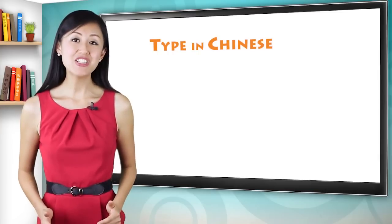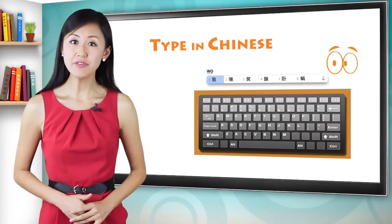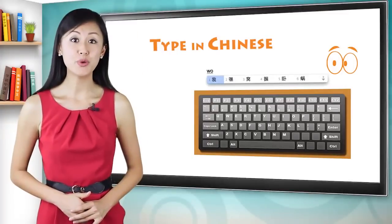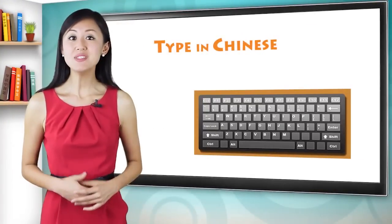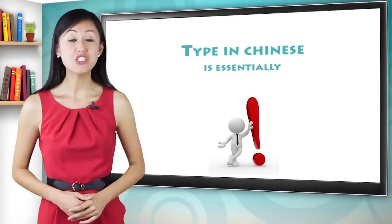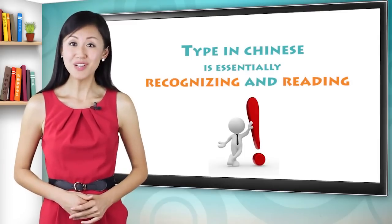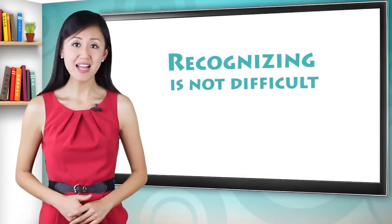So when you type in Chinese, you first need to spell out the words in pinyin, and then look at a list of characters generated by the computer, and pick out the one that you want. So can you see how the process of typing in Chinese is essentially just recognizing or reading? And recognizing is not a difficult task really.